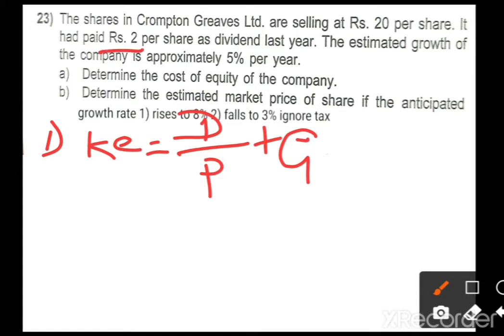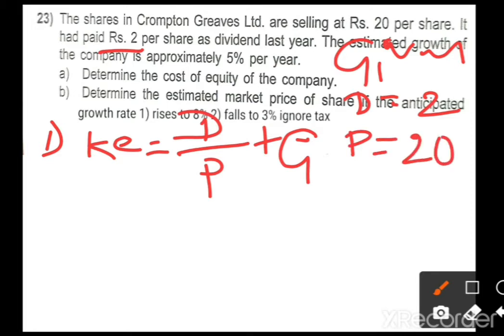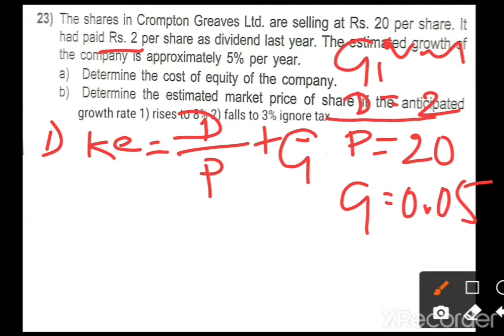Given information: dividend D = 2 rupees, market price (net proceeds) P = 20 rupees, growth rate g = 0.05 (that is, 5 percent divided by 100). One very important point: the dividend given here is 'last year's dividend,' not the current year dividend. So we need to identify the current year dividend.